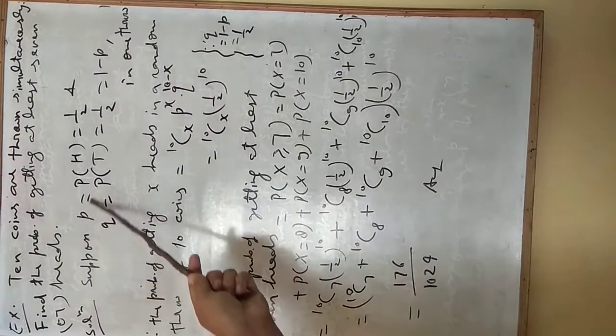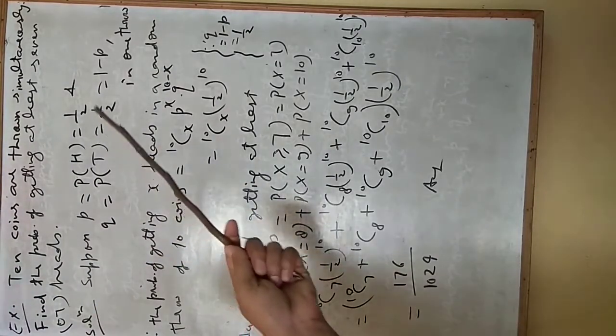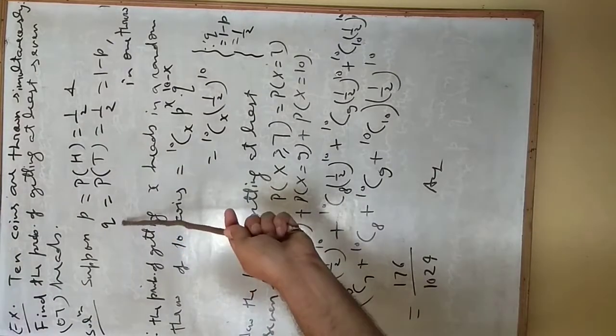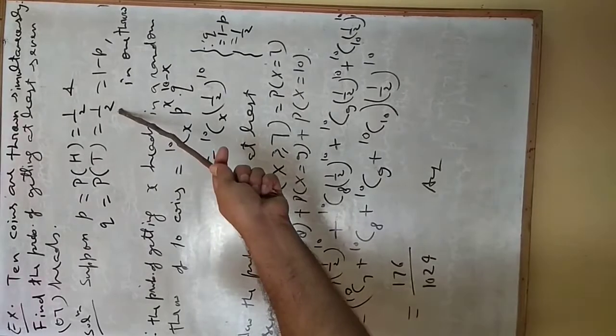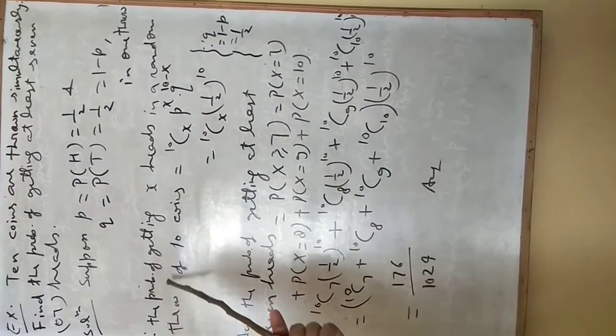Now suppose p is our probability of head, this is 1 by 2. Since in any trial, in any throw of a coin, we will get probability 1 by 2 for head and probability of tail, this is q, it is also 1 by 2. It is 1 minus p in one throw.